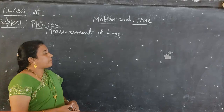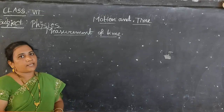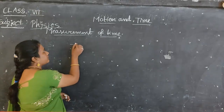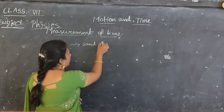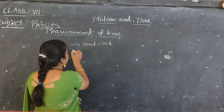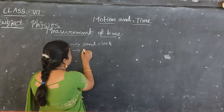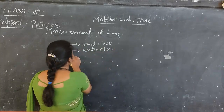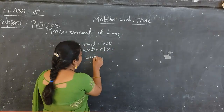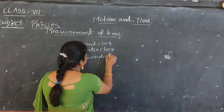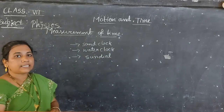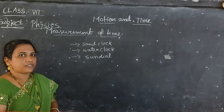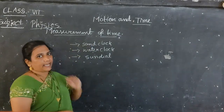For measurement of time in modern days we are using different types of devices. In ancient times, they used devices like the sand clock, the water clock, and sunlight — that is, the sundial. These are the three different devices used in the ancient period to measure time.